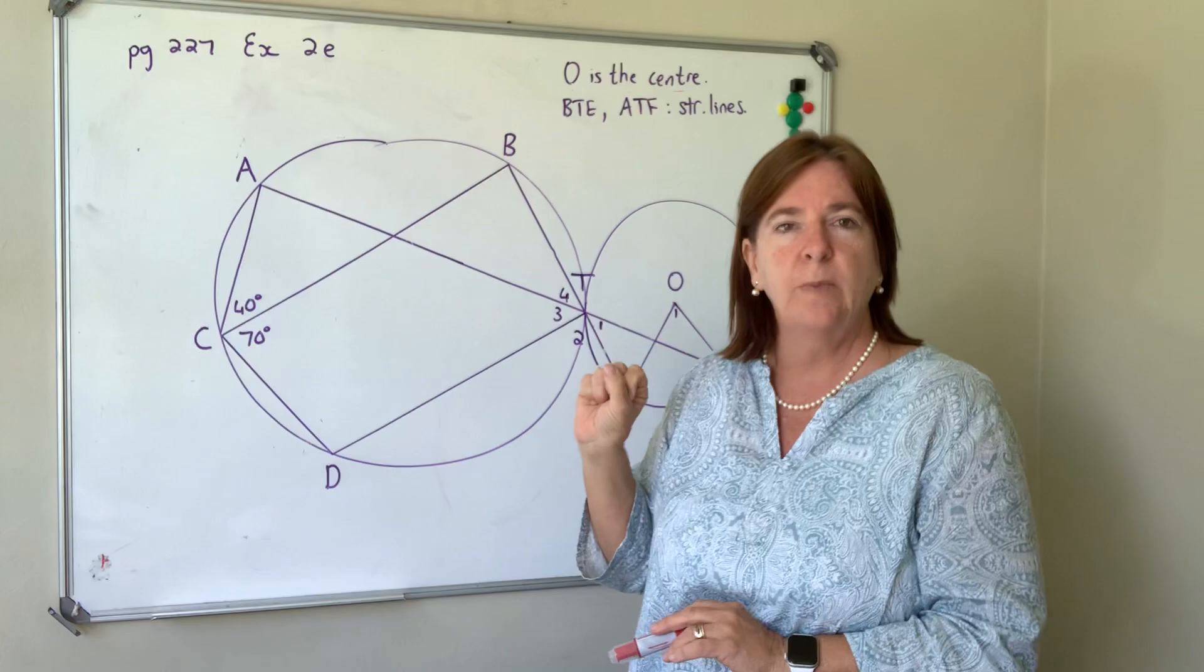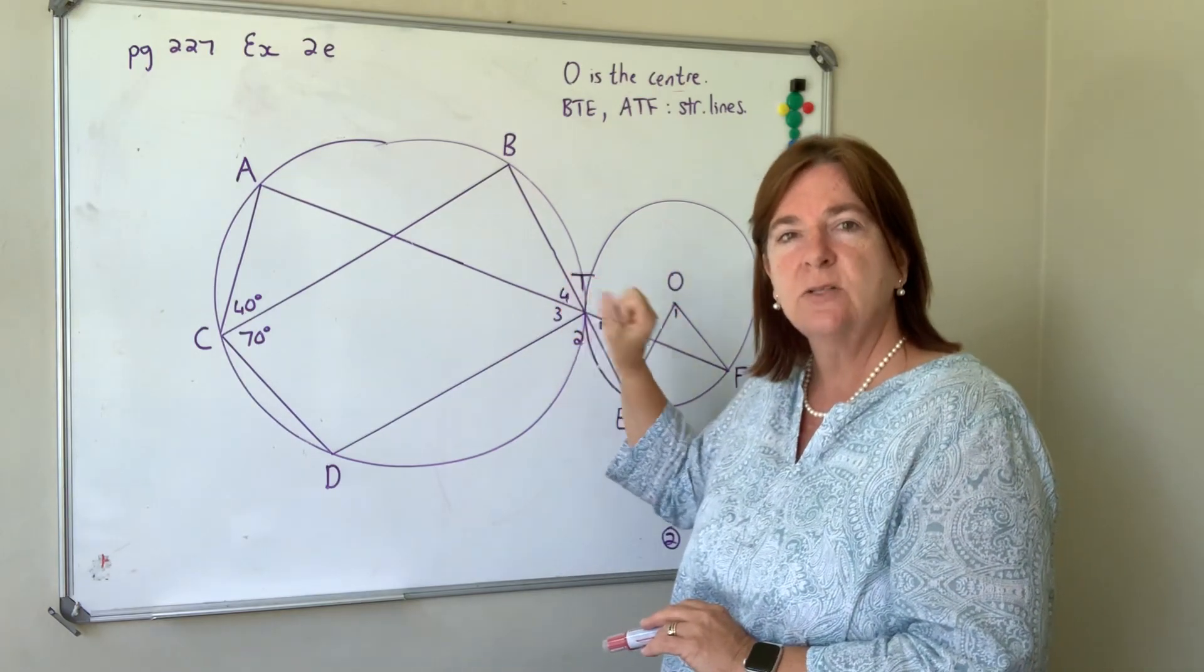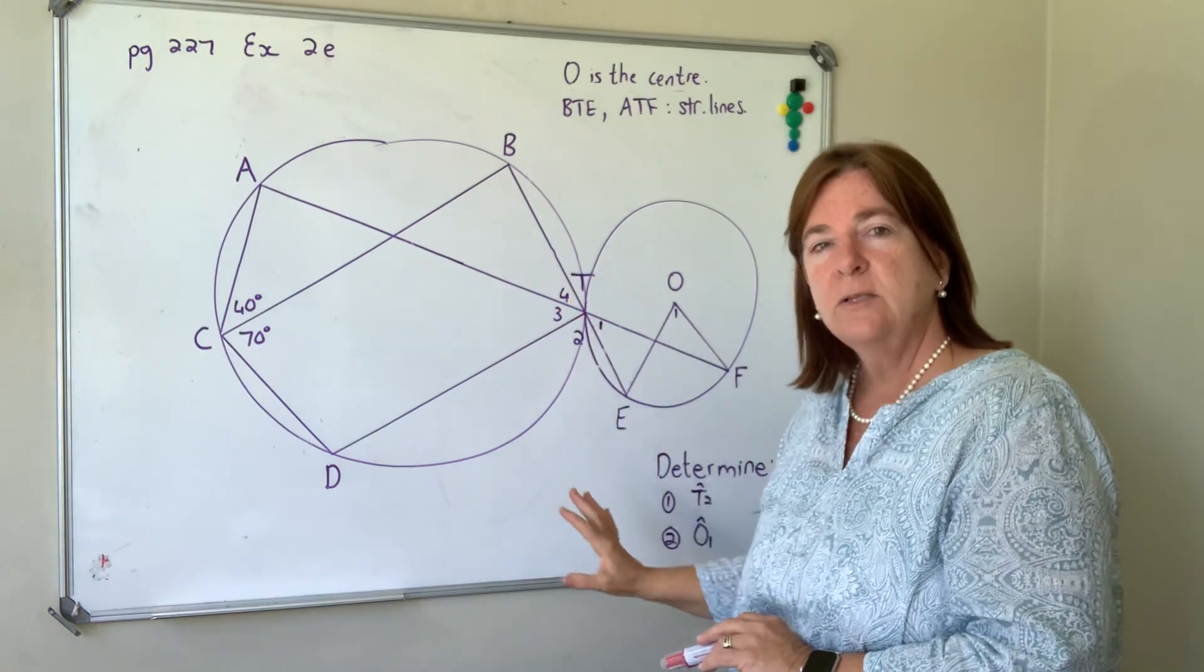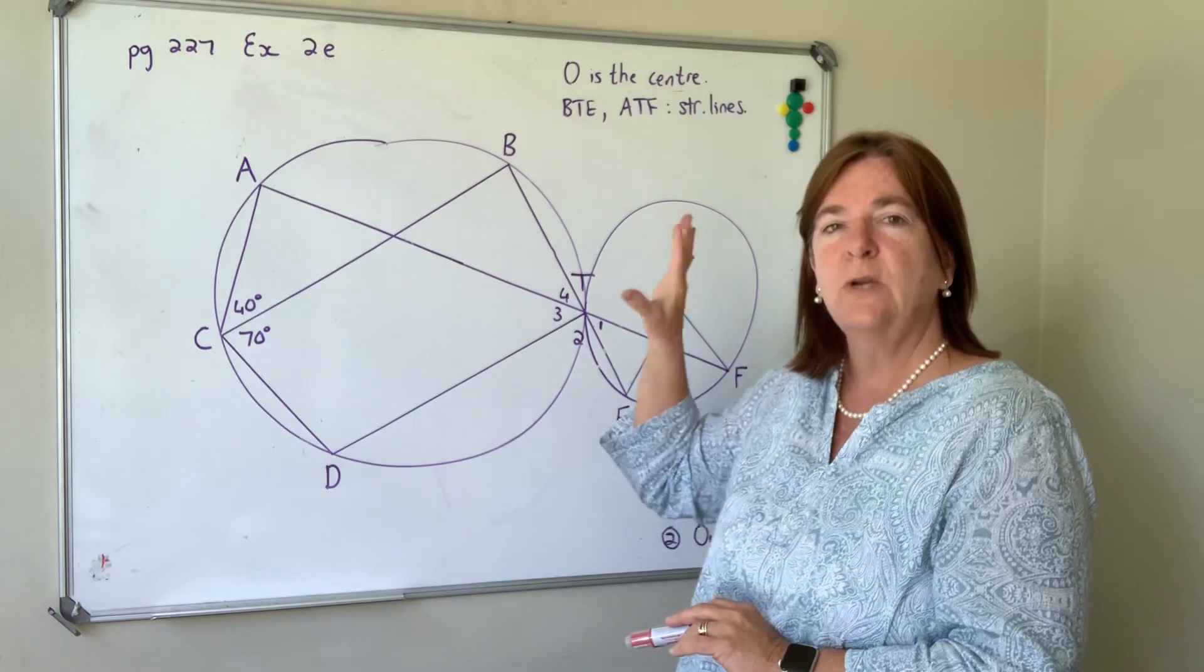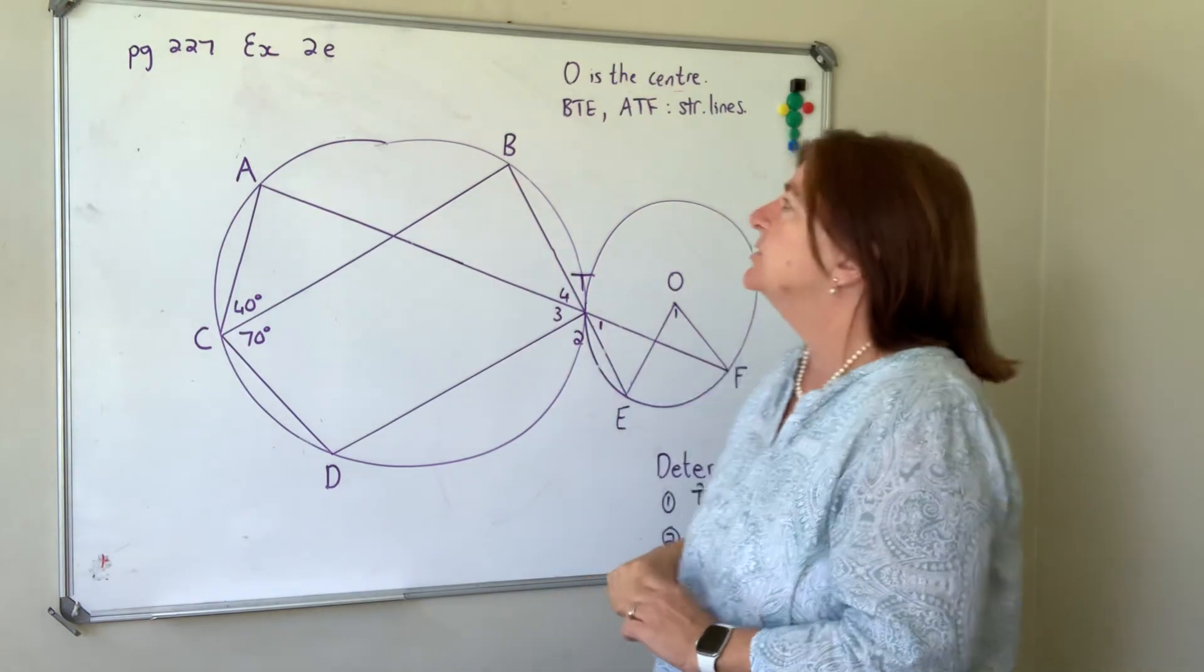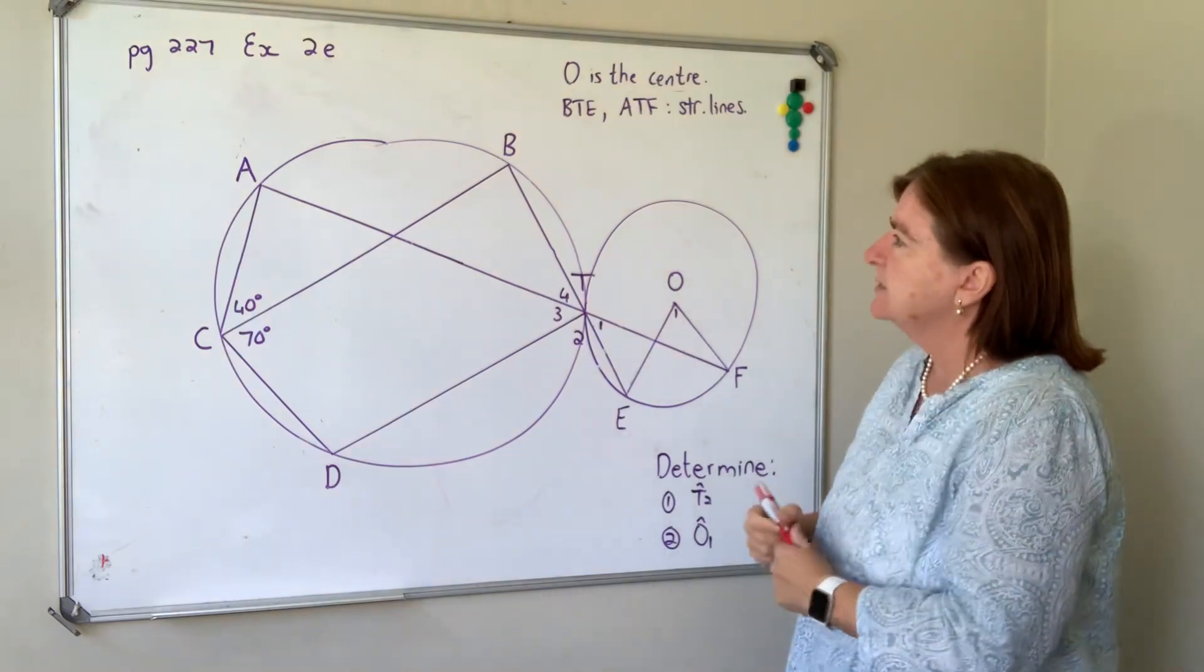In this particular question and all questions you're given a blurb describing the sketch, and we need to start by extracting important information from that blurb and then put it on our sketch. So in this question they tell us O is the center.